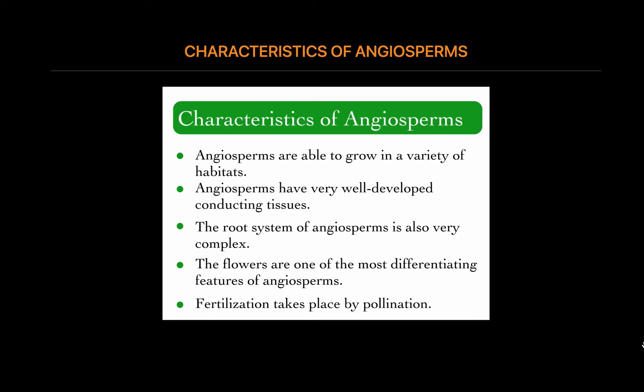All plants have flowers at some stage in their life. The flowers are the reproductive organs for the plant, providing them with a means of exchanging genetic information. Angiosperms have very well developed conducting tissues. These tissues include the xylem and the phloem arranged in the form of vascular bundles. The xylem contains vessels. Similarly, phloem consists of sieve tubes and companion cells.